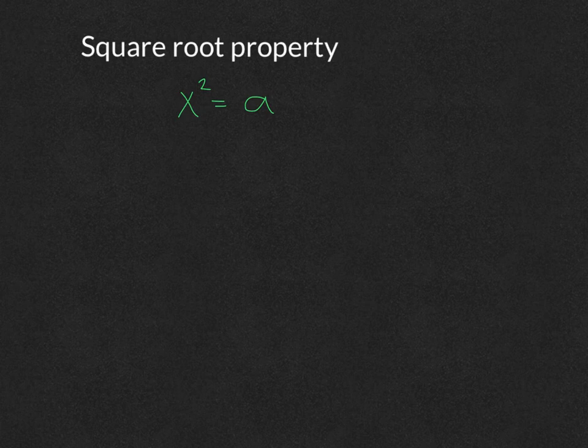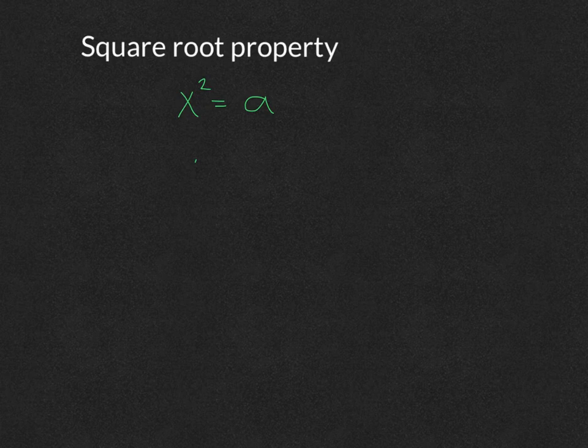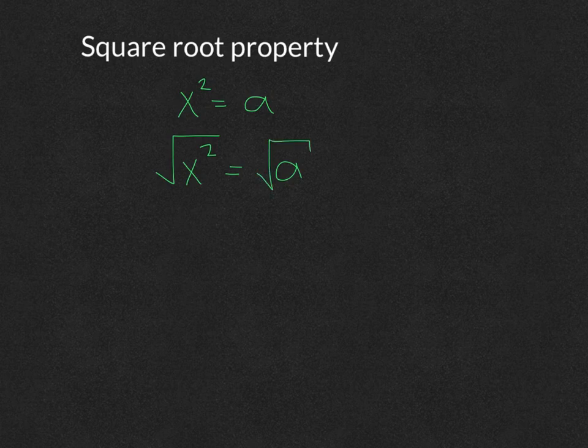If you have a quadratic equation in the form x squared equals a number, to solve it you simply take the square root of both sides - the square root of the left side and the square root of the right side.